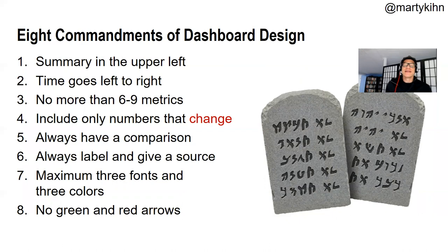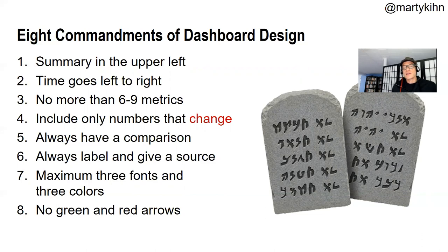Eight commandments of dashboard design. One: the summary goes in the upper left — that's where the eye gravitates. What's the big takeaway? Two: time goes left to right. Three: no more than six to nine big metrics — keep it compact. Four: only include numbers that change. Vanity metrics, like number of Facebook likes that go up 1.5% a month — don't include them. Only include numbers that change in an interesting way. Five: always have a comparison — previous week, previous month, previous year — there needs to be something to compare to. Six: always give a label and source. Seven: fonts and colors — no red and green arrows.